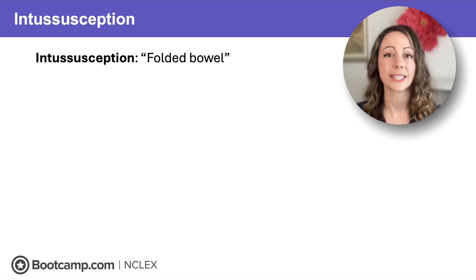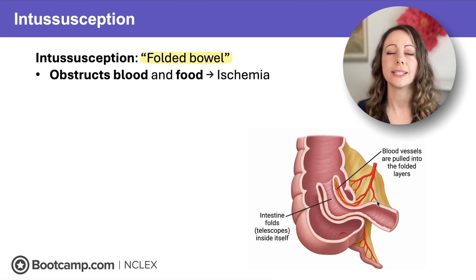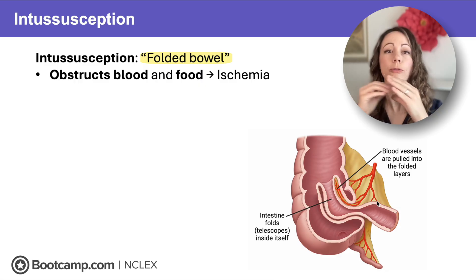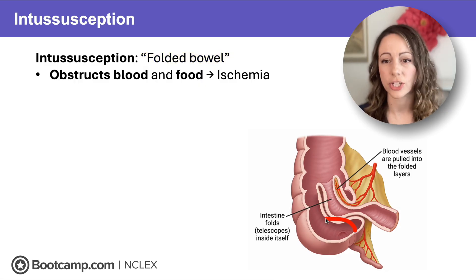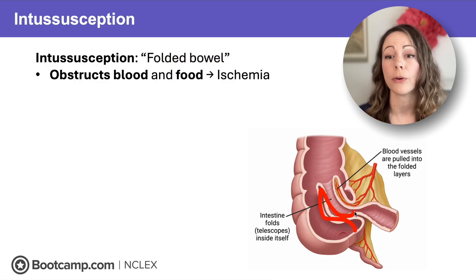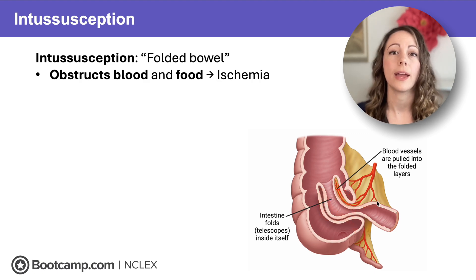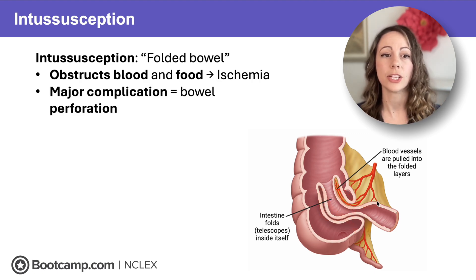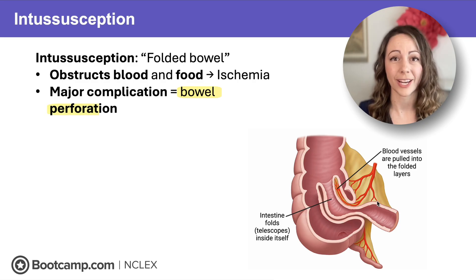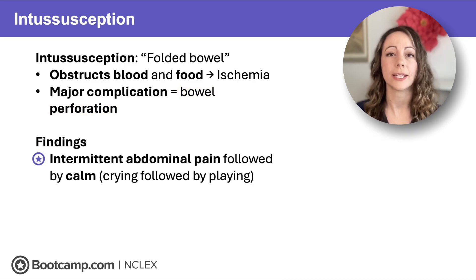Now we go down to the intestines. For intussusception, think folded bowel. This is when the bowel folds inside of itself, causing obstruction of blood flow and food in that bowel. That can lead to deadly ischemia and our next major complication: bowel perforation.